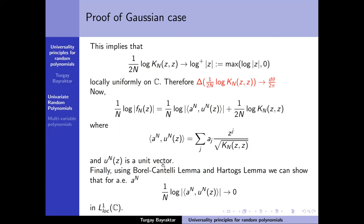Since the first term goes to 0 in L^1 log and the second term converges to the potential, you can pass to the Laplacian. The first term contributes 0 and the second term gives d-theta over 2-pi. Therefore, for almost every polynomial f_n, the Laplacian of this expression converges — and the Laplacian is precisely the sum of Dirac measures at the zeros of f_n. This proves the almost-sure part of the theorem; the part with the expectation has a similar proof.